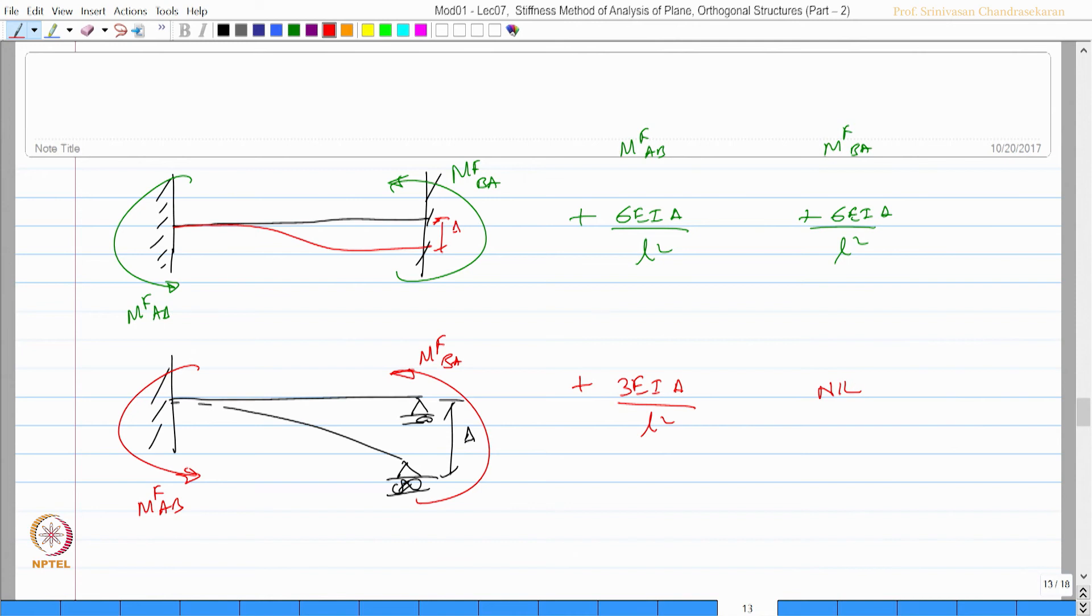These are some of the standard formats based on which one can calculate the end moments either caused by the load on the beam or with displacements or rotations of the joint. By reversing this we will be able to get the joint loads. Once I get the joint loads, I can compute the unstrained displacements of the problem. That is the general solution what we have. Let us quickly look at the summary.